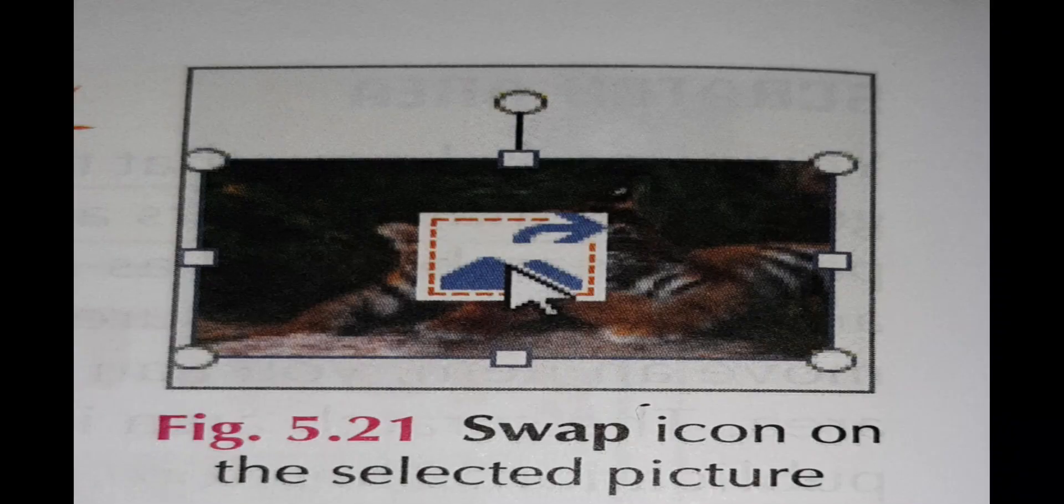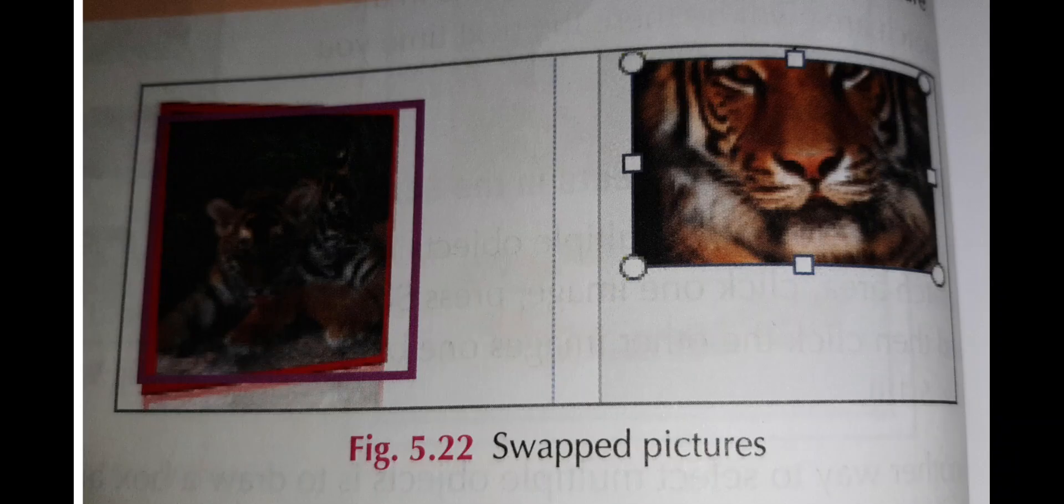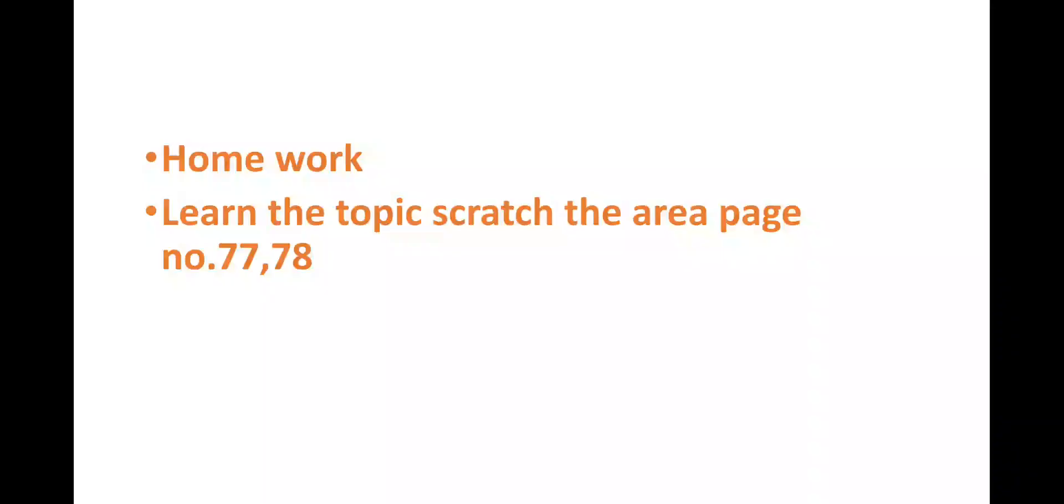That's what I have told you about this picture - the swap icon. Select the picture. It's very easy. You can see the pink boundary, the pink shade. When the pink boundary is displayed, release the mouse button to swap the picture. It's very easy students. You can do it by yourself. So as your homework, you have to learn the topic Scratch the Area, page number 77 and 78. Thank you.